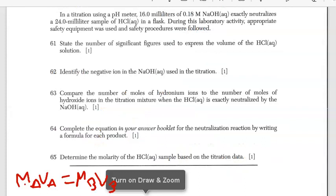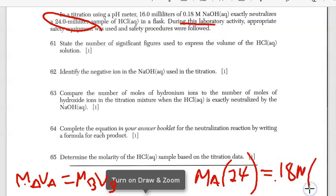I wrote out the equation. We're determining the molarity, so you're actually going to solve for it. The molarity of the acid, that's our X or MA, that's what we're solving for. The volume of the acid was given as 24.0 milliliters. On the other side, the molarity of the base, 0.18 molar, and the volume of the base was 16 milliliters. As long as your volumes are consistent on both sides, either milliliters on both or liters on both, you're good to go. You're going to take 0.18, multiply by 16, divide by 24, and your answer is 0.12 molar for the acid.